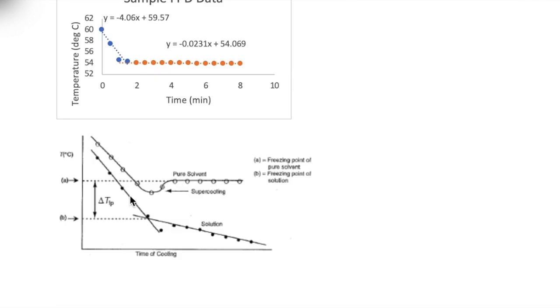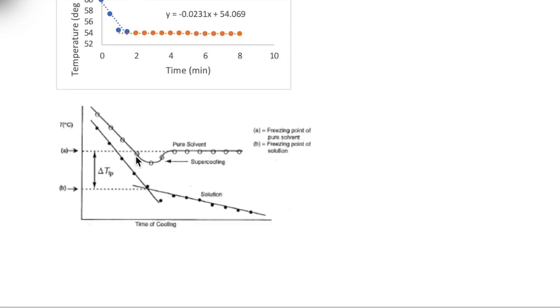One quick note, sometimes the pure solvent may undergo a phenomenon called supercooling, which is where a substance remains liquid below its freezing point. This occurs due to the absence of crystal nucleation points needed for a liquid to form a solid. However, as the temperature is reduced, eventually the solid will form. Supercooling appears in your data as shown here as a dip, which then increases back up to the freezing point when the solid forms.